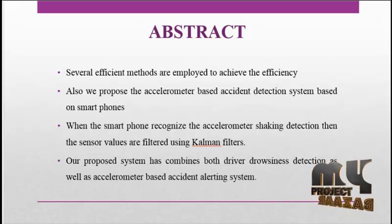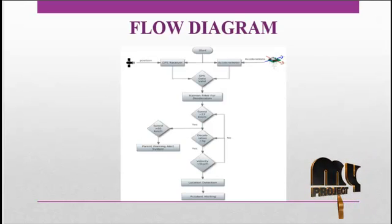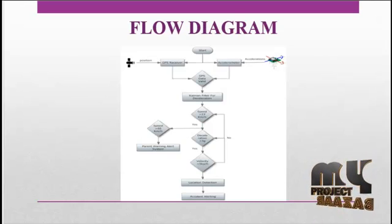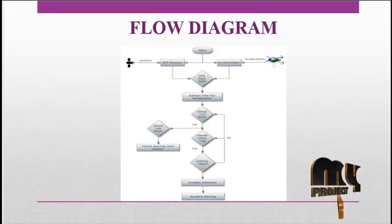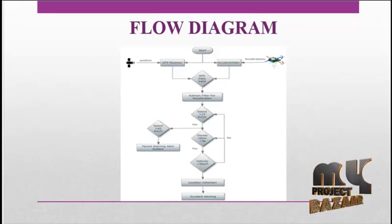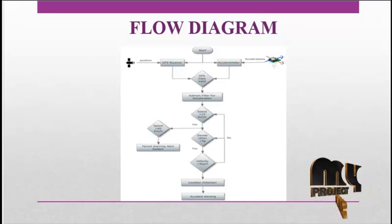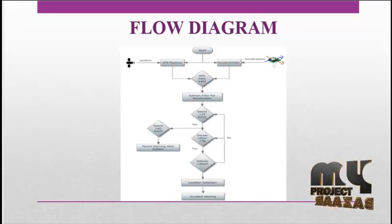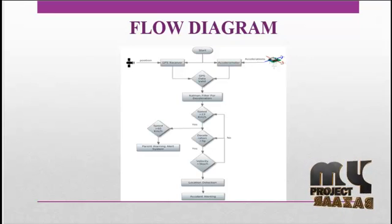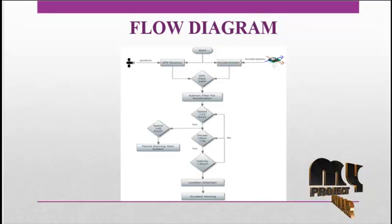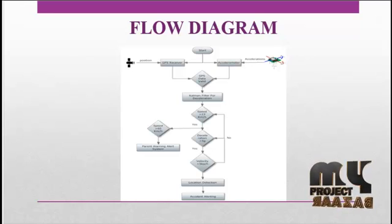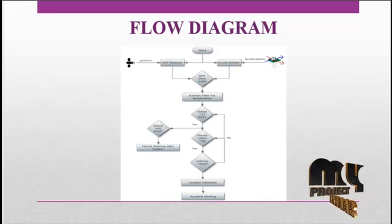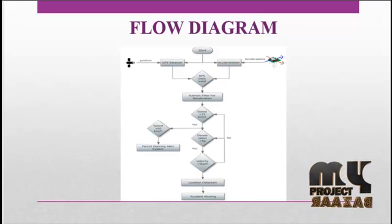Let's see our project data flow diagram. In the process, the GPS position is obtained by the GPS receiver and accelerometer values are obtained by the accelerometer receiver. Both GPS and accelerometer values are validated by the GPS data validation process.